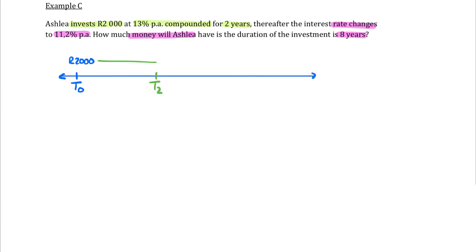Then it says that this money grows for two years. So that money is sitting inside an account gaining interest for two years. What is the interest rate? 13% is 0.13. So her money has grown to more than 2,000 Rand after two years. But then the interest rate changes.